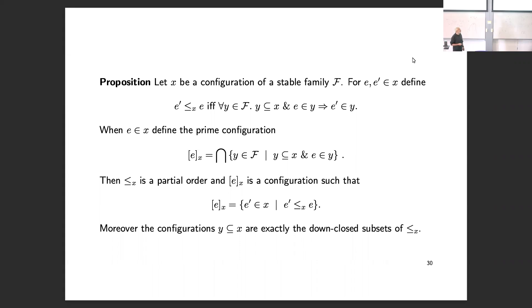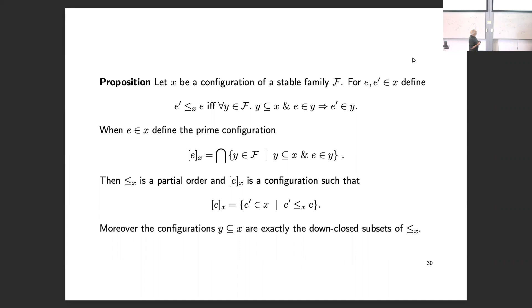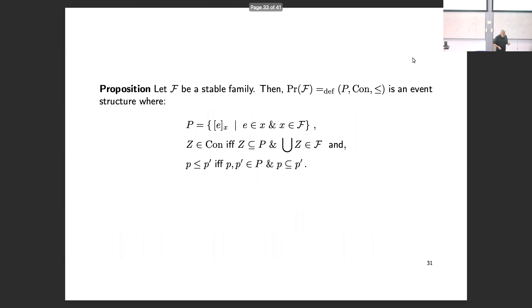Intuitively, if we have a stable family, it won't necessarily be the case that all local partial orders combine into a global one — but local to any configuration we have a notion of causal dependency and a notion of the minimal way an event can occur. This is useful because when working with stable families instead of event structures, locally they behave like event structures.